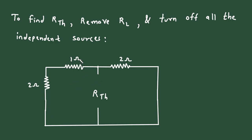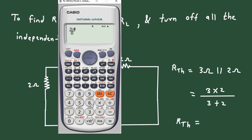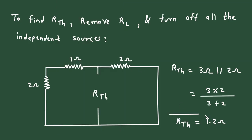Now here we can see this 1 Ohm and this 2 Ohm are connected in series, and this 2 Ohm is connected in parallel to this. So it will be 3 Ohm parallel with 2 Ohm. Rth is equal to 3 multiplied by 2 divided by 3 plus 2, which gives Rth equal to 1.2 Ohm.